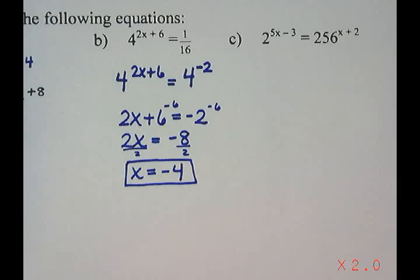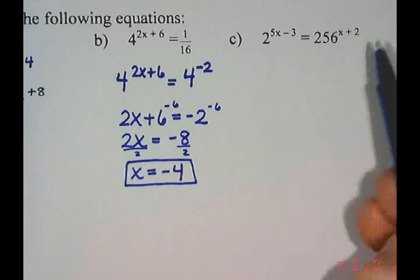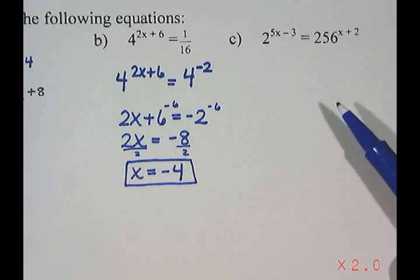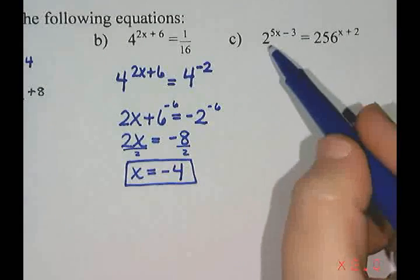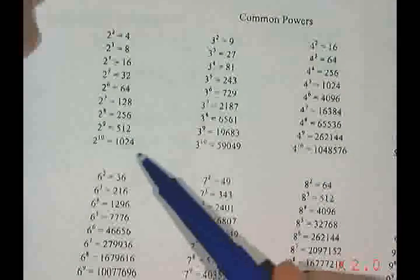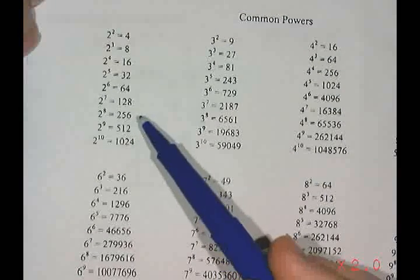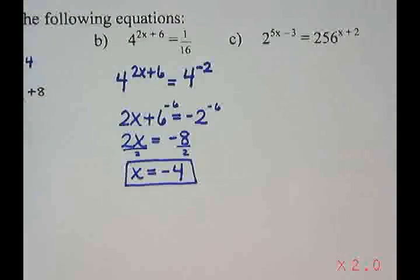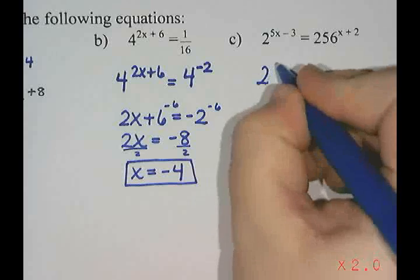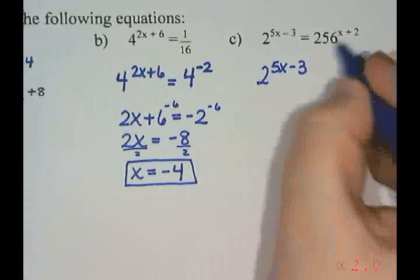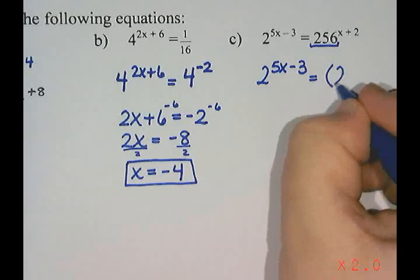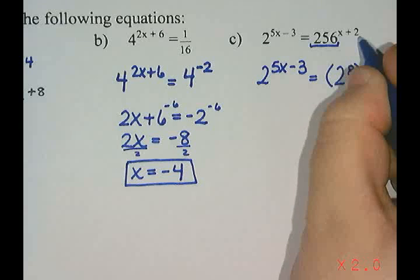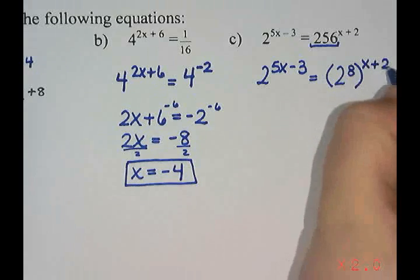In part c, we have 2 to the power of 5x minus 3 equals 256 to the power of x plus 2. There are more exponents here, but I still want to write them as powers of the same base. The smallest base is 2, and looking at my powers of 2, I see that 2 to the power of 8 is 256. So I'll rewrite 256 as 2 to the power of 8, raised to the power of x plus 2.